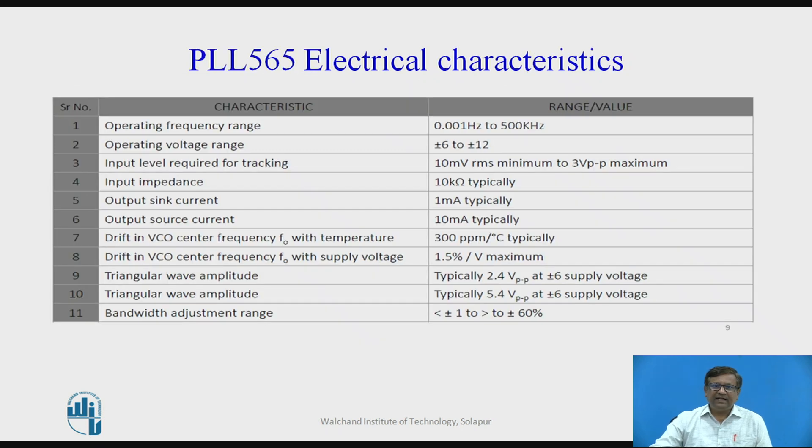These are some electrical characteristics of IC 565. The operating frequency range of this IC is from 0.001 hertz to 500 kilohertz, a very wide frequency range. The operating voltage range is also very wide that is plus or minus 6 volts to plus or minus 12 volts. The input signal level required is 10 mV RMS minimum to 3 volts peak to peak maximum. Input impedance is 10 kilo ohm.